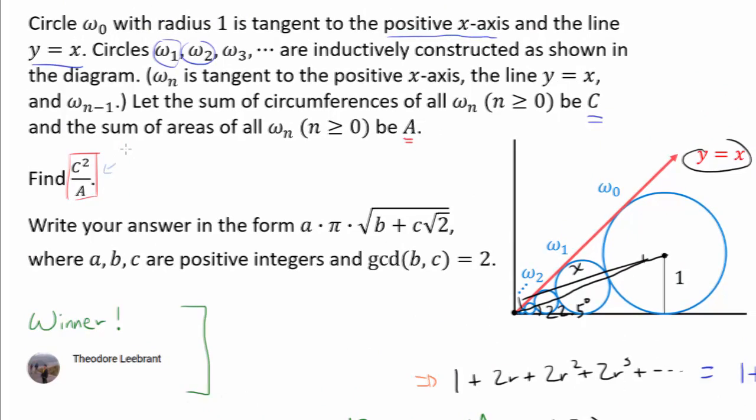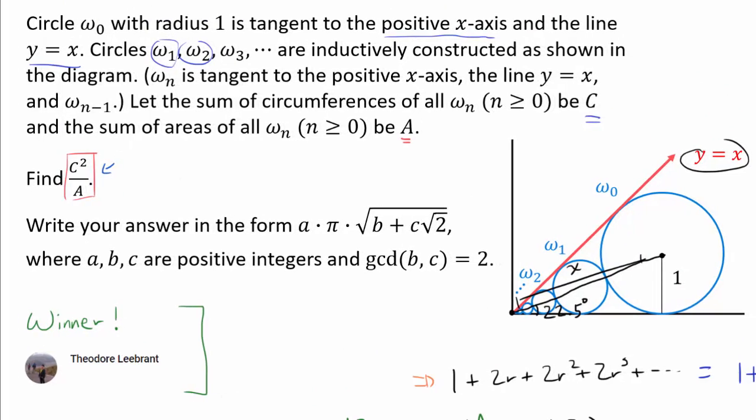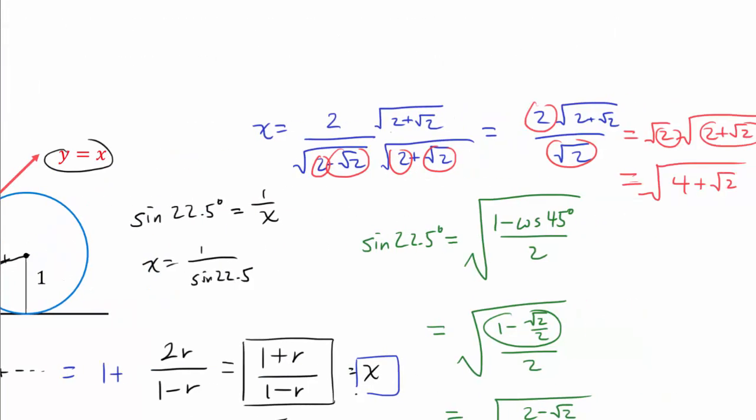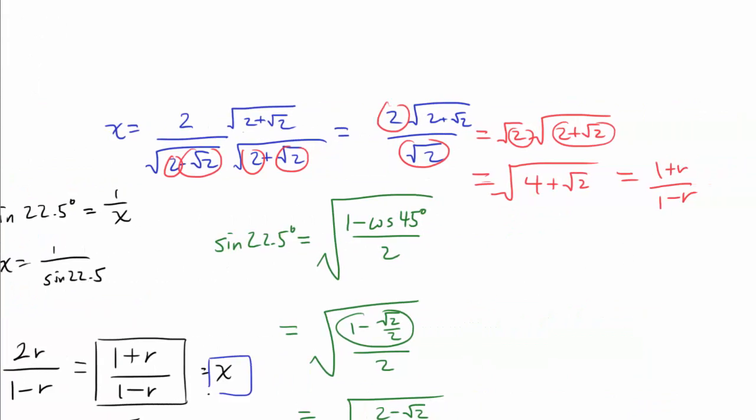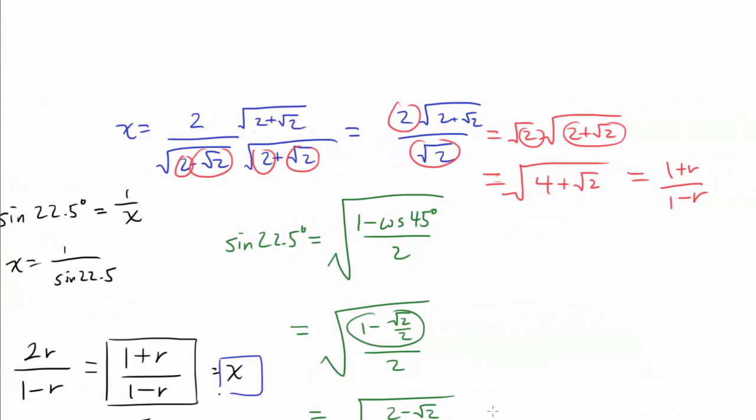And here is an idea. There is a chance that C² over A is going to contain an expression similar to (1 + R) over (1 minus R). If that's the case, we may not need to go ahead and do all the algebra to find R.